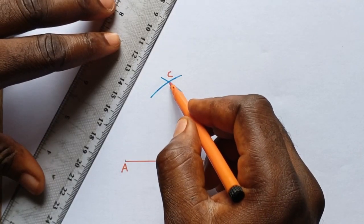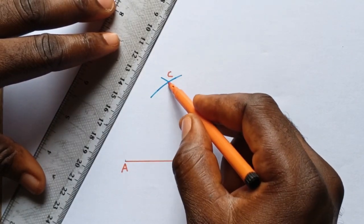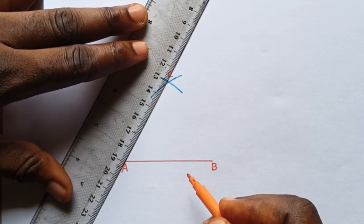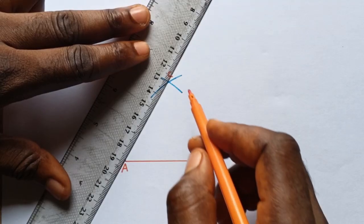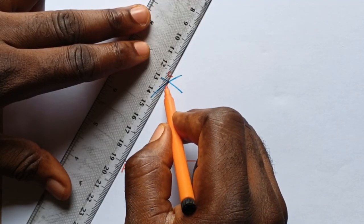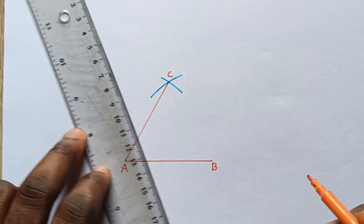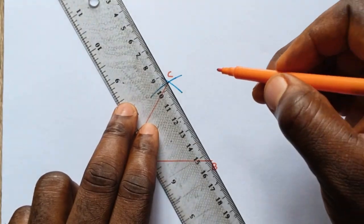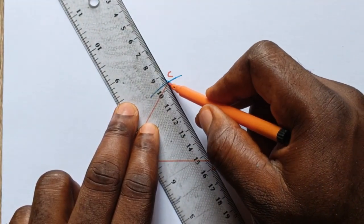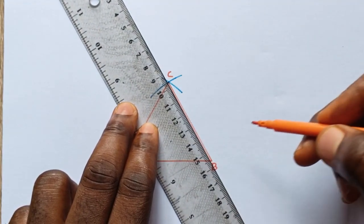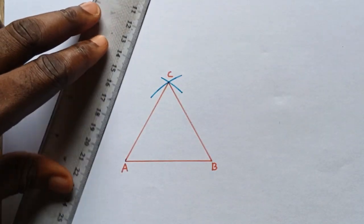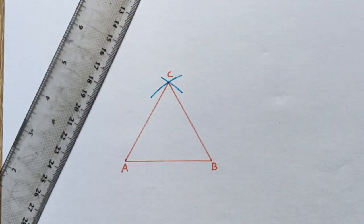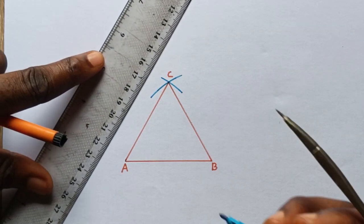Now join from where the arcs intersect to point A, and from the intersection to point B.